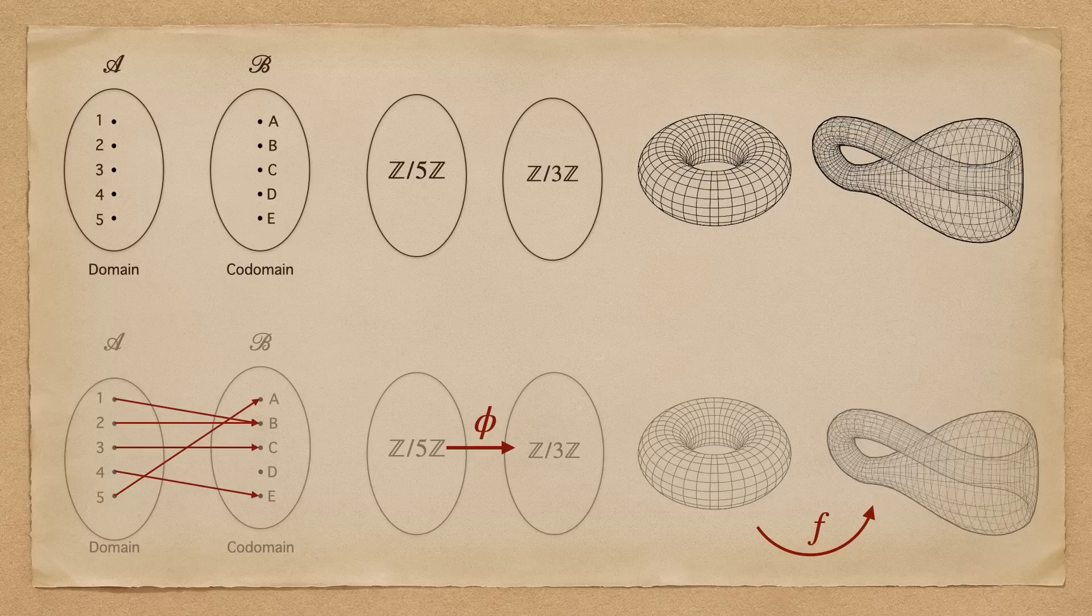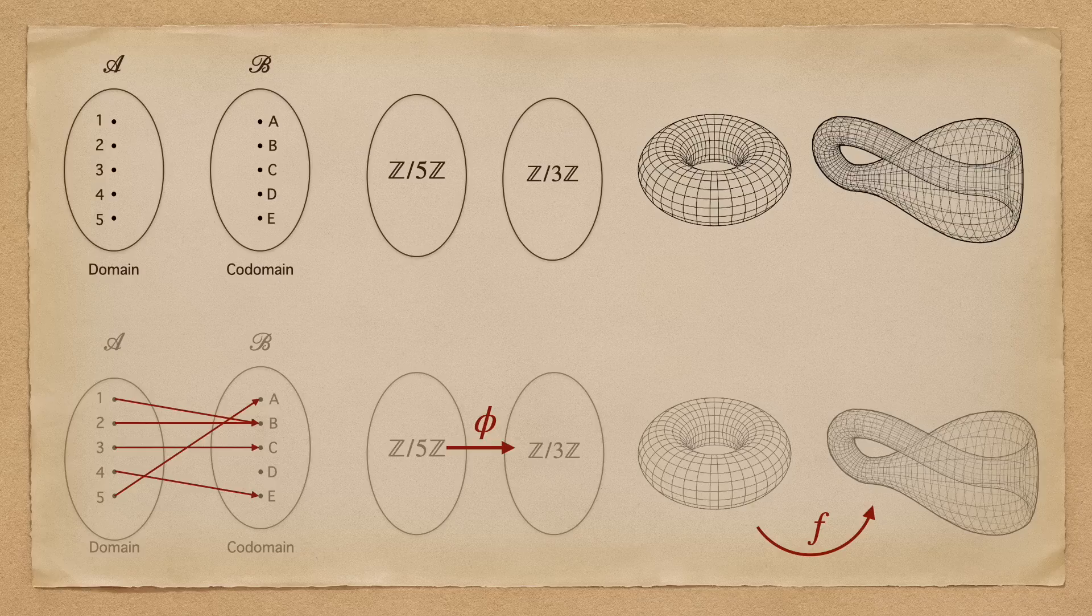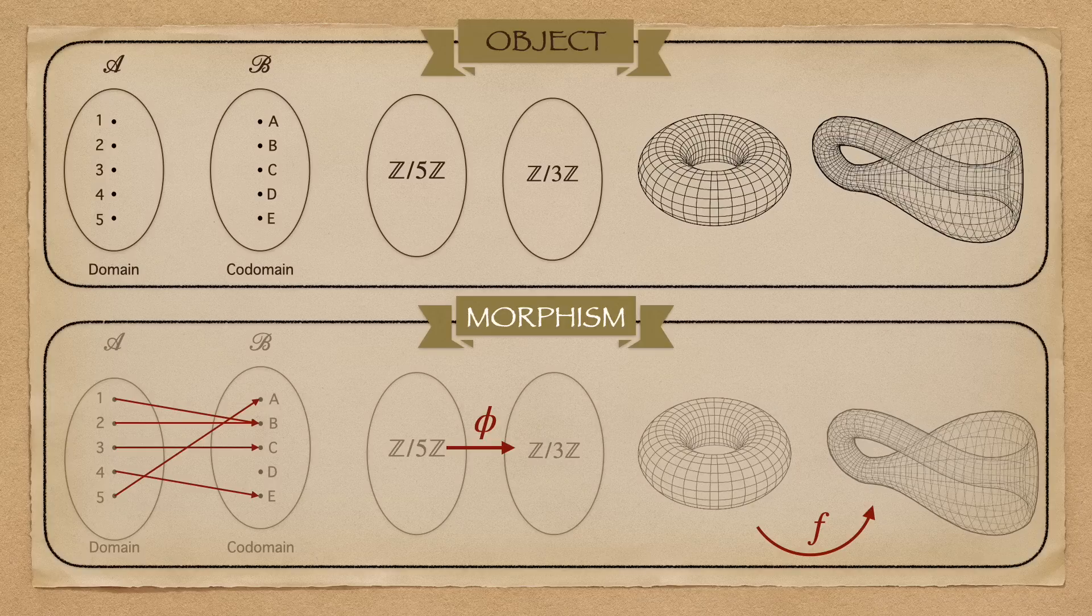As good mathematicians, we ask, how can we generalize the structure? This gives rise to objects and morphisms, and together they make categories.